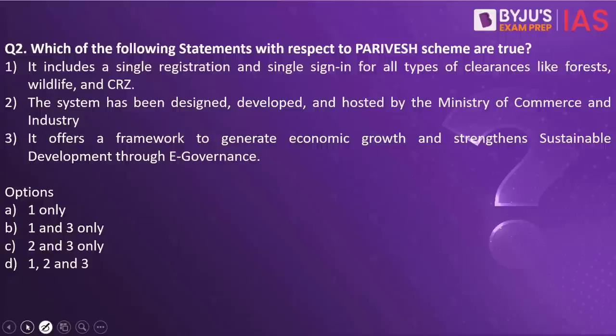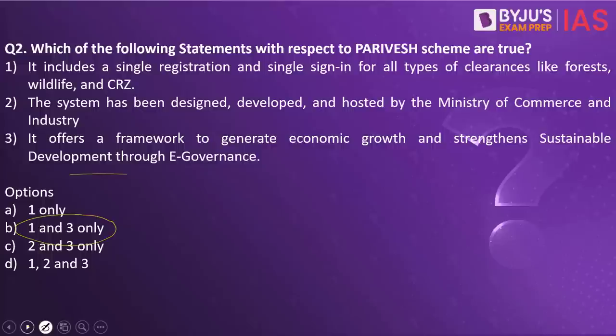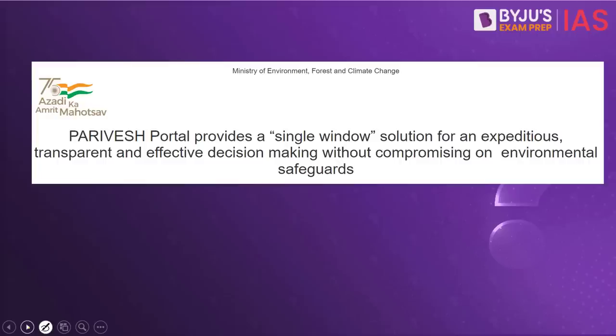Now let's look at the next practice question. Which of the following statements with respect to the Parivesh scheme are true? It includes a single registration and single sign-in for all types of clearances like forest, wildlife and CRZ. The system has been designed, developed and hosted by the Ministry of Commerce and Industry. It offers a framework to generate economic growth and strengthens sustainable development through e-commerce. Which statements are correct? The answer is 1 and 3 only. This question was taken because of the reference to the Parivesh portal in the PIB article.